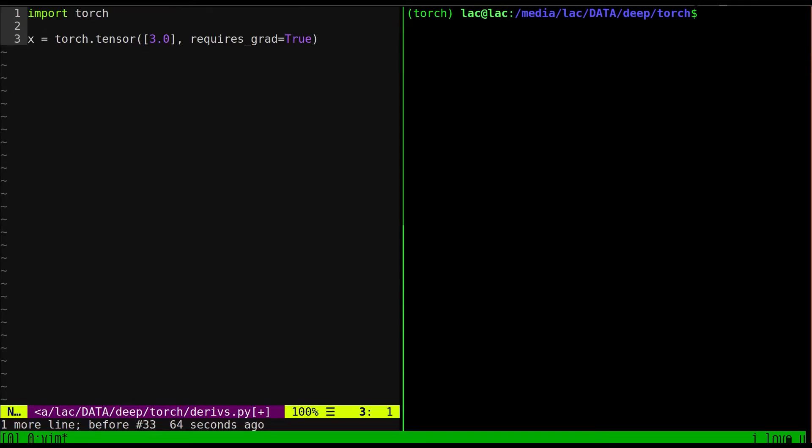So the first thing that we're going to do is define the value that we want to compute the derivative in regards to, in this case 3, and we're going to do it in a way where the autograd on PyTorch starts basically tracking, starts recording operations that we're going to need for differentiation. So you're going to say requires grad true.